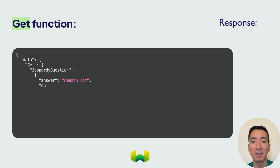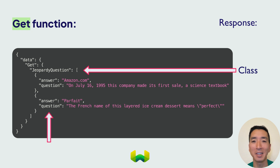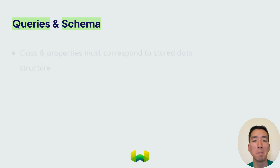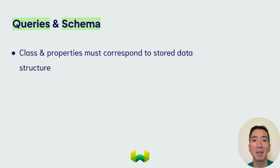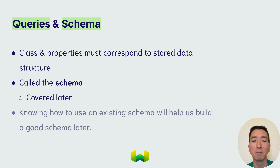The response from Weaviate then will be in JSON format, reflecting the structure of the get query and the properties of the objects being retrieved. The class and properties fields being retrieved must correspond to objects and properties that are stored in Weaviate in what is called the schema. You'll learn more about how to construct a schema in another unit. But knowing how to use a defined schema will help you immensely when it comes time to build your own schema and to populate Weaviate with it.